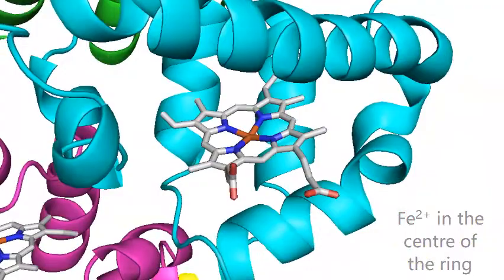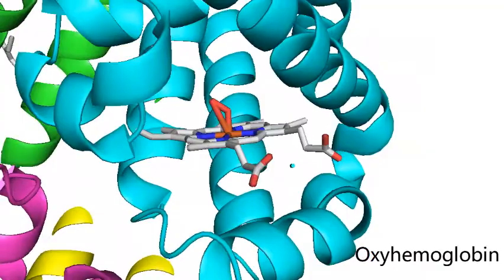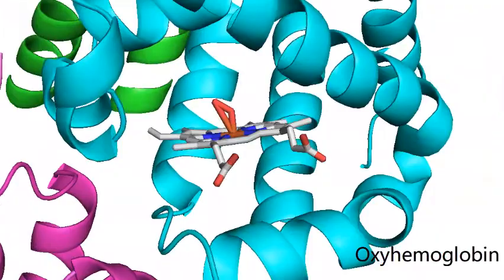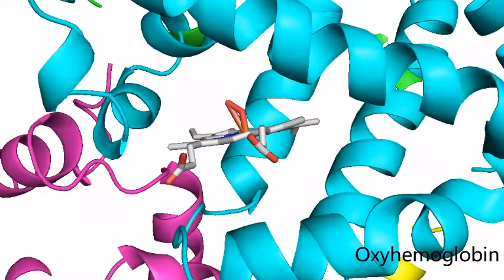Hemoglobin is best known for carrying molecular oxygen forming oxyhemoglobin. We have an example of oxyhemoglobin here. This allows oxygen to be transported around the body to be used in respiration.